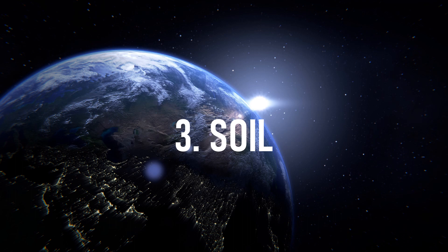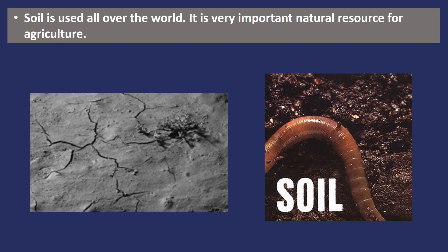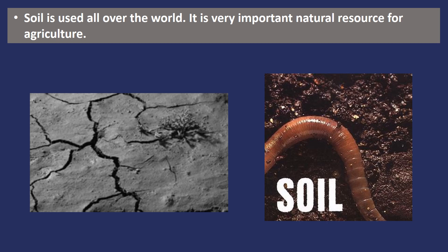Soil forms at the surface of land. It is the skin of the earth. A farmer uses the land to grow crops, which not only fulfils his own needs but also fulfils others' needs. Soil is a natural resource which is naturally available to us and is very important. Soil is used all over the world for growing plants, making utensils, building materials, etc. It is also a home to many microorganisms.